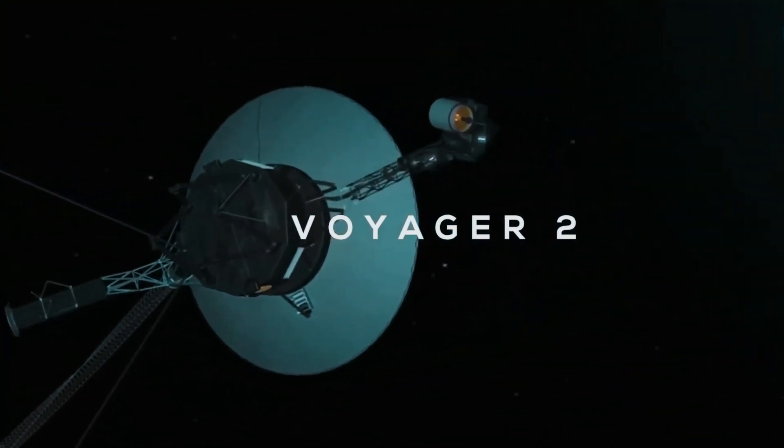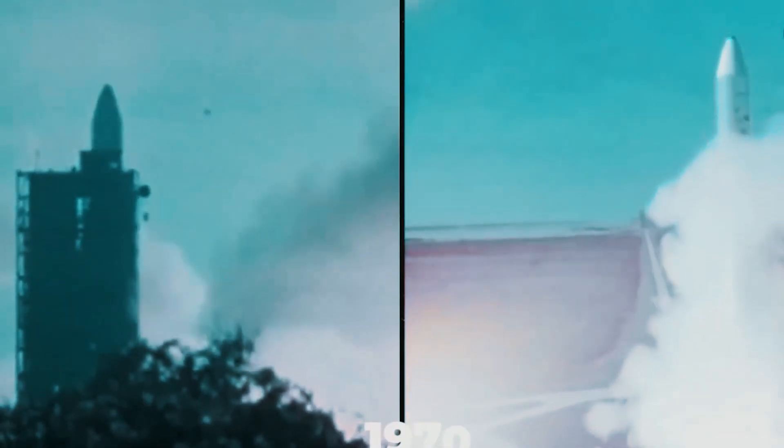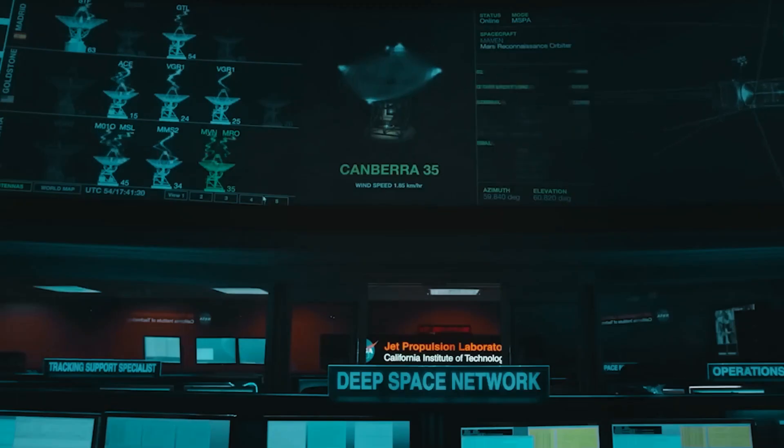Voyager 2 is the farthest spacecraft from our Earth. It was launched in the 1970s and has been sending data back to us accurately until recently.